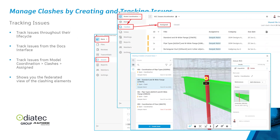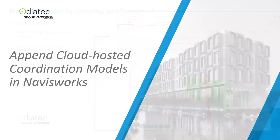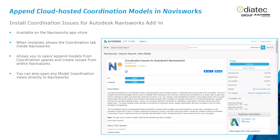You can track issues either in the Issues panel or the Assigned Clashes panel — in Docs or inside Model Coordination — they are the same issues. You can also append cloud-hosted coordination models in Navisworks. To do that, you need a plugin called 'Coordination Issues for Autodesk Navisworks.' It allows you to pull models from Model Coordination into a Navisworks federation file — NWF or NWD — and it's important to install it if you want to use Model Coordination with Navisworks.